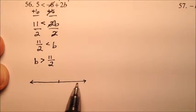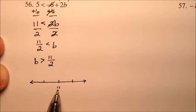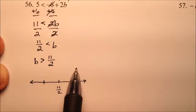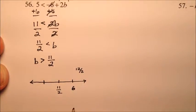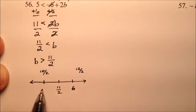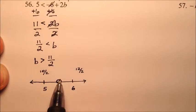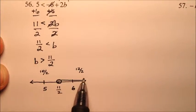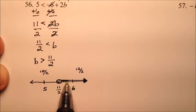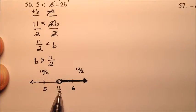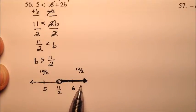To graph this, put 11 halves in the middle. One to the right is 12 halves, which is 6. One to the left is 10 halves, which is 5. So the number line shows 5, 11 halves, and 6. With an open circle at 11 halves, the line extends to the right. Solution for 56: b is greater than 11 halves, open circle at 11 halves, line extending indefinitely to the right.